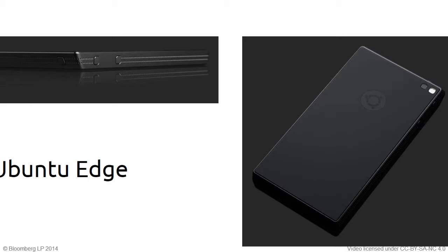Some of you may have heard of the Ubuntu Edge campaign — that was pretty exciting for a while. It was an Indiegogo attempt to raise $32 million in a month to create a very high-end phone, probably going for 4 gigs of RAM, 128 gigs storage, and the strangest esoteric thing was the sapphire crystal screen — you can't scratch it unless you have a diamond. We were just going to see if there was a market for it. It fell well short of its goals. Our friends at Bloomberg actually pledged $80,000 — that would have been 515 devices. Thanks guys.